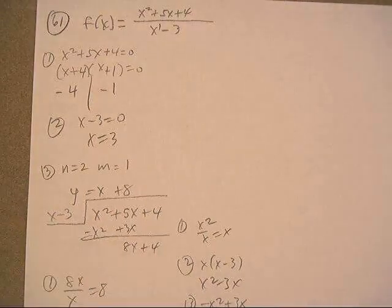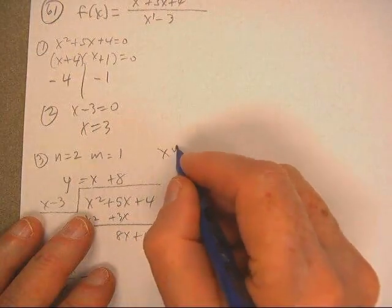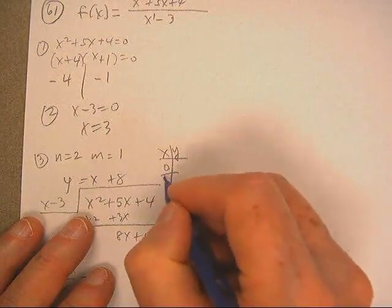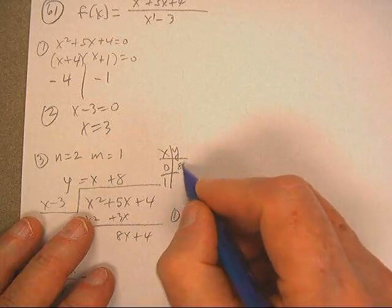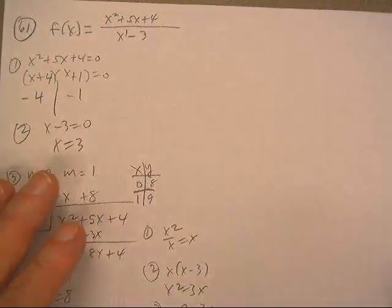There's your y equals mx plus b. So let's see, let's get a couple of points. How about zero and one? Eight and nine. Okay, so there's my two points. Now let's go start our graph.